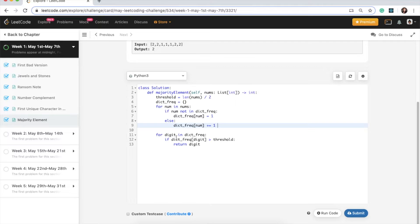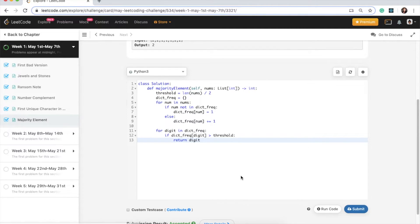Okay, and after all that is done, I'm iterating over each item in the dictionary. And I'm just checking if that frequency is greater than the threshold that we defined up here. So after doing that, I'm just returning the digit. And we know that the question says that there will always be an element which has a majority. So that's why I did not put another return outside this for loop. Okay, so let's go ahead and submit. Okay, great. So that works.